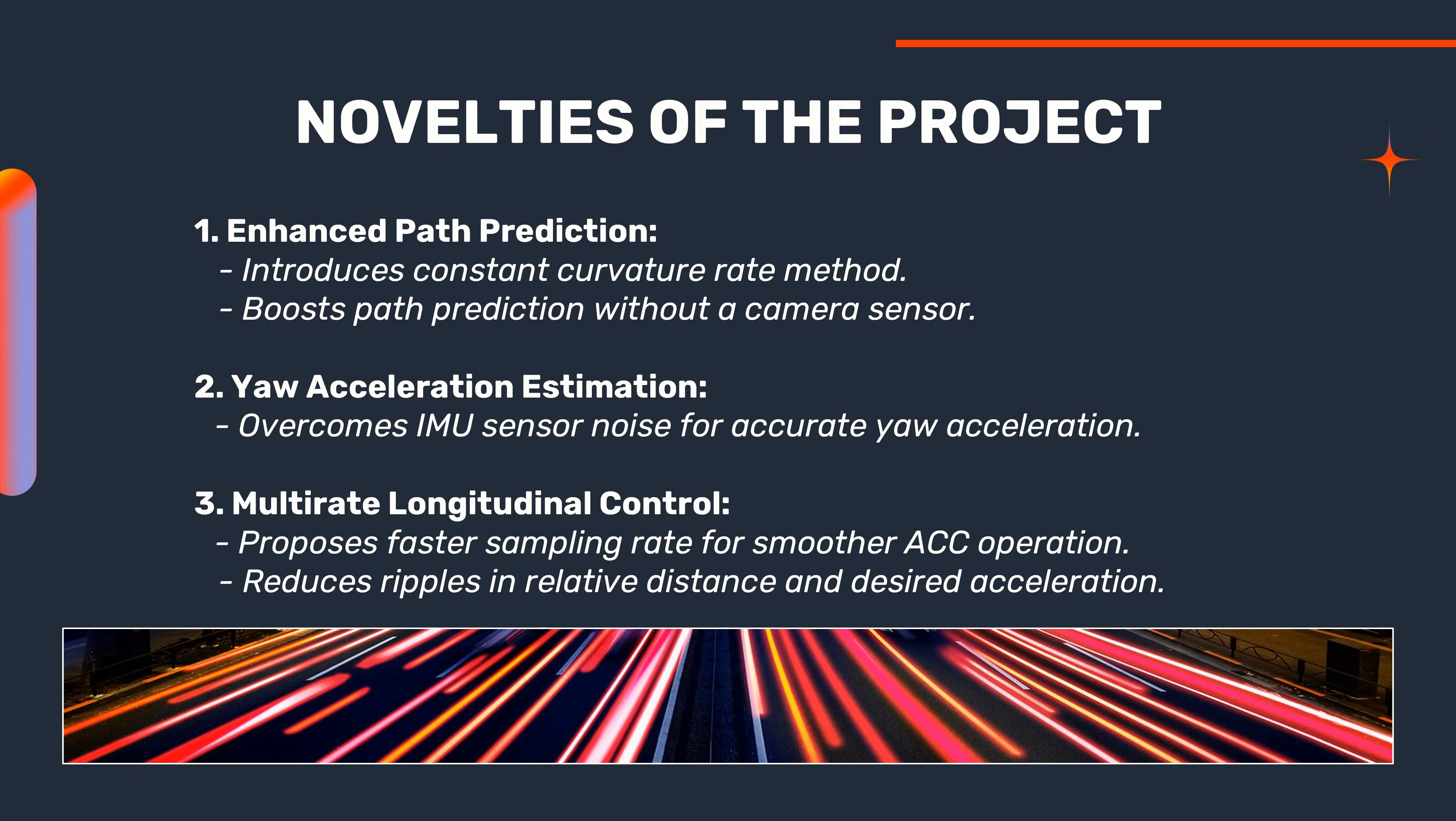The novelty of this study lies in the design of path prediction method based on a constant curvature rate. The model uses a clothoidal cubic polynomial curve requiring inputs such as curvature rate, yaw rate, and longitudinal velocity. To address challenges in directly differentiating the yaw rate due to IMU sensor noise, a Kalman filter is used to estimate the yaw acceleration.